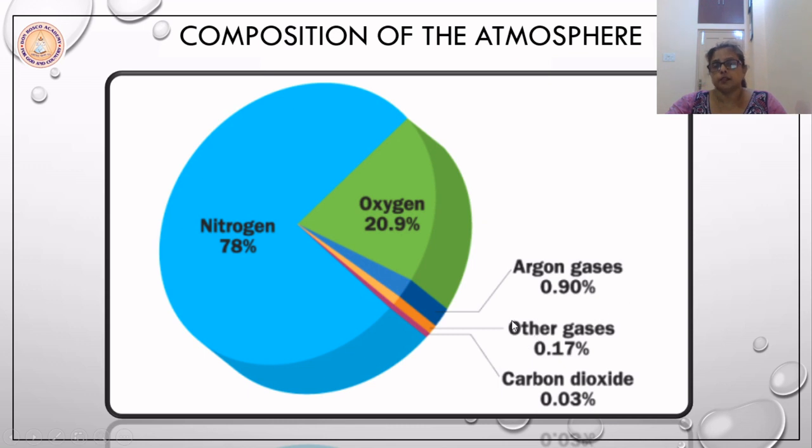Apart from all this, in this composition along with the other gases, we have got several impurities like smoke, salts, pollen grains, certain chemicals of varying quantities. All are found in the atmosphere.